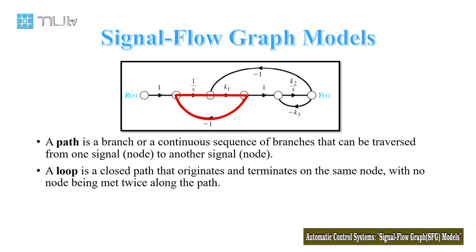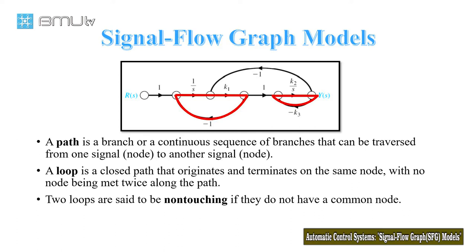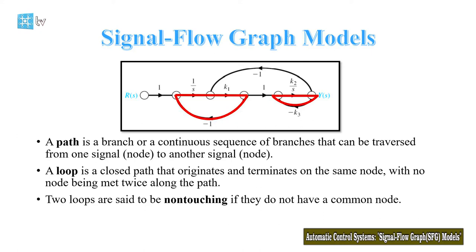This is a loop. As you see here, no node is met twice along this path. We say that two loops are non-touching if they do not have a common node. If two loops have no common node, we say these two loops are non-touching.